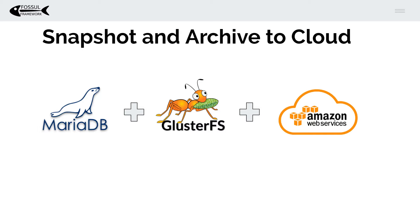What we've prepared today is a MariaDB database running on OpenShift, which is Red Hat's Enterprise Kubernetes distribution. That MariaDB database has a persistent volume which is being backed by Gluster, a container-native storage solution providing storage services to applications and databases in OpenShift. We're going to provide a MariaDB consistent Gluster snapshot, archive that snapshot to the cloud using Amazon S3, and then show you how to perform a recovery using that Gluster snapshot.